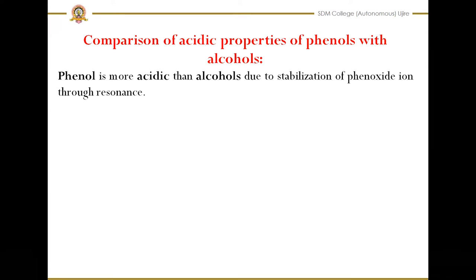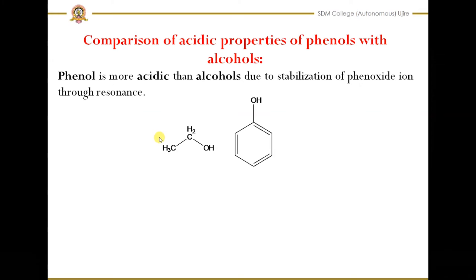First, comparison of acidic properties of phenols with alcohols. When you compare phenol and alcohol, phenols are more acidic than alcohols. This is due to the stabilization of the phenoxide ion through resonance. We will take the example of ethanol, which has the formula CH₃CH₂OH, and phenol, which has the formula C₆H₅OH.